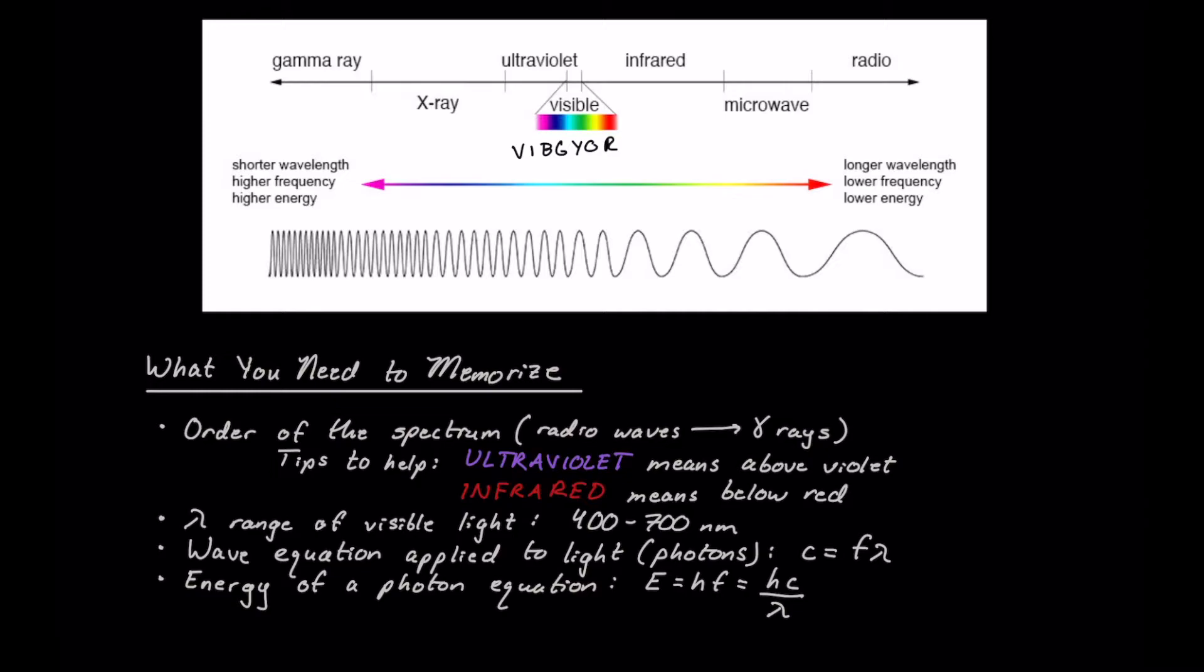Next we're going to look at wavelength range. Wavelength range of visible light specifically is 400 to 700 nanometers. And what we should be familiar with is the red side is going to correspond more to that 700 and the violet is going to correspond more to that 400 nanometers.